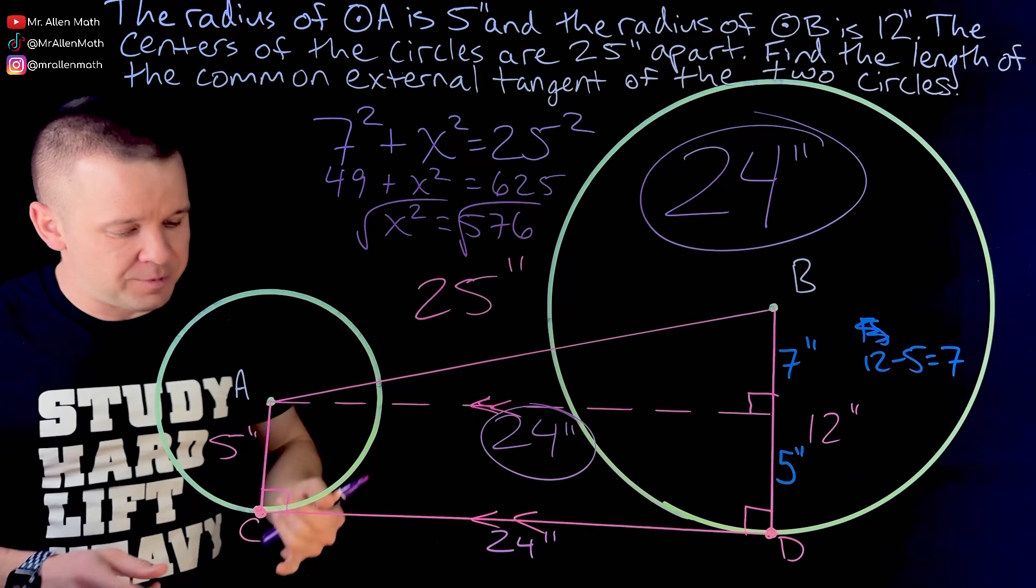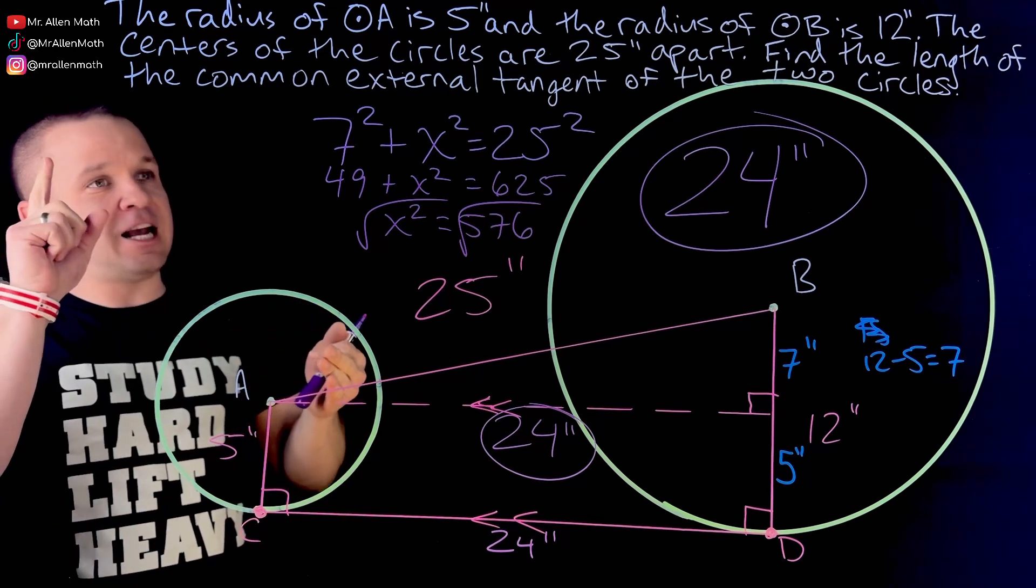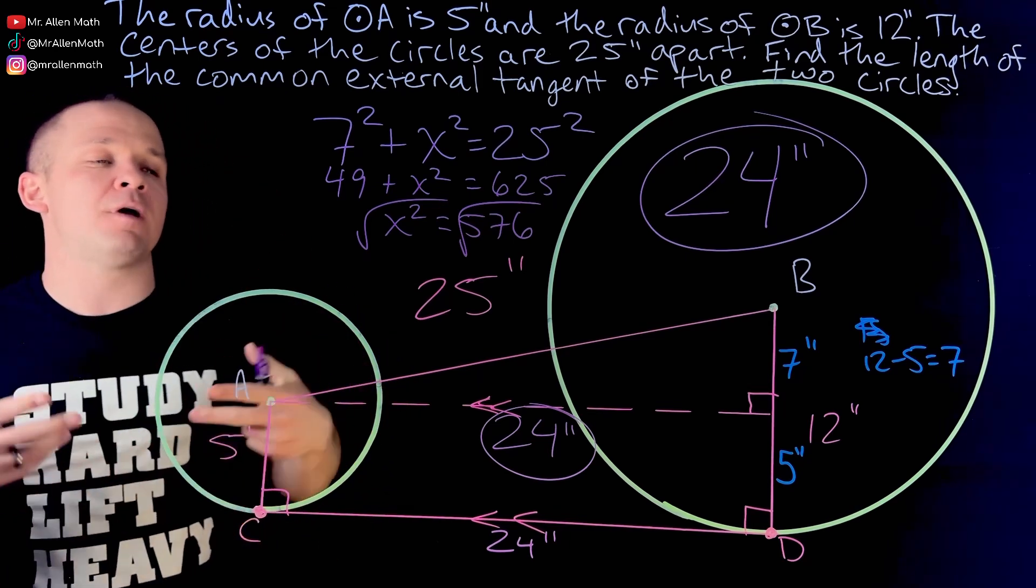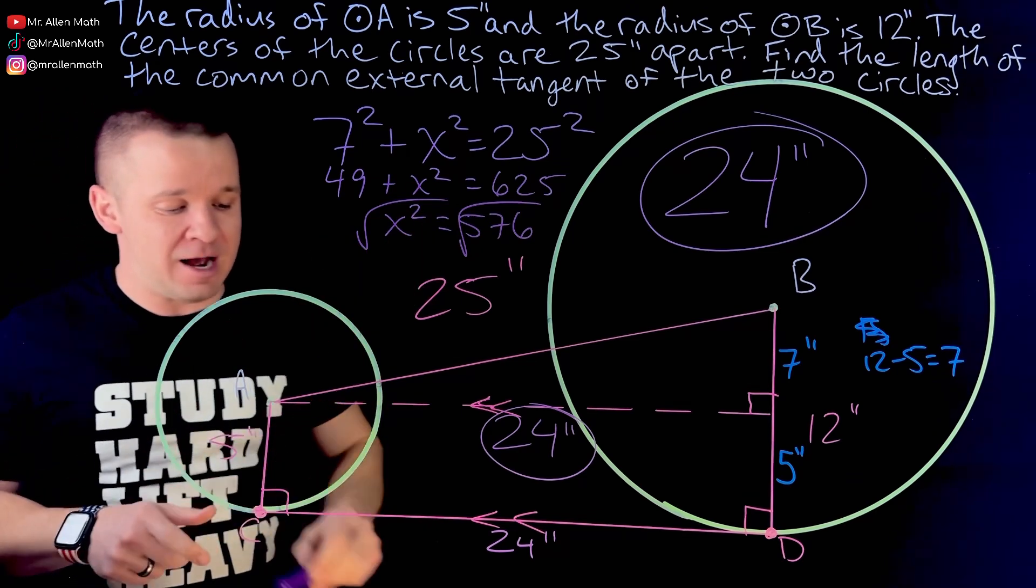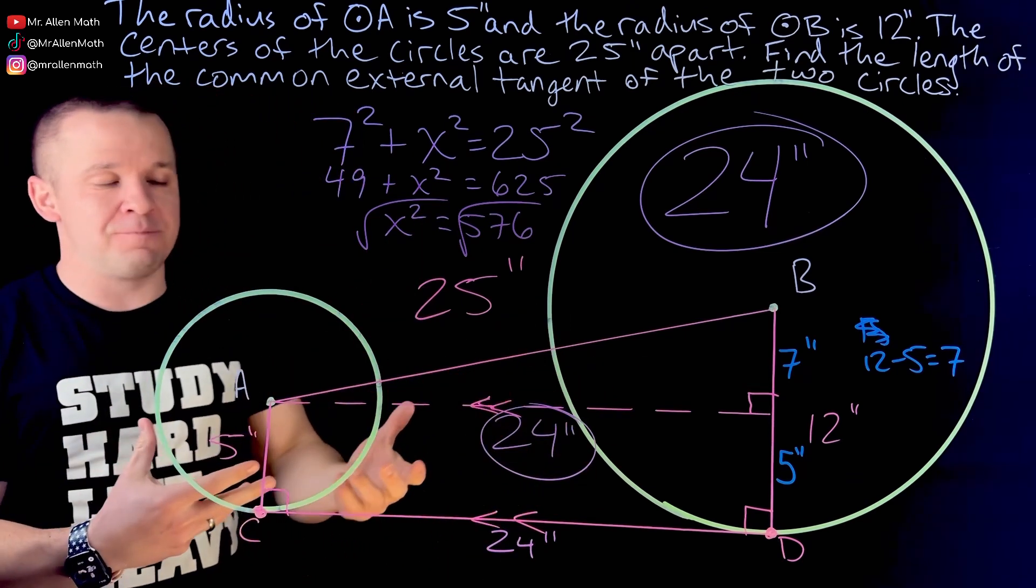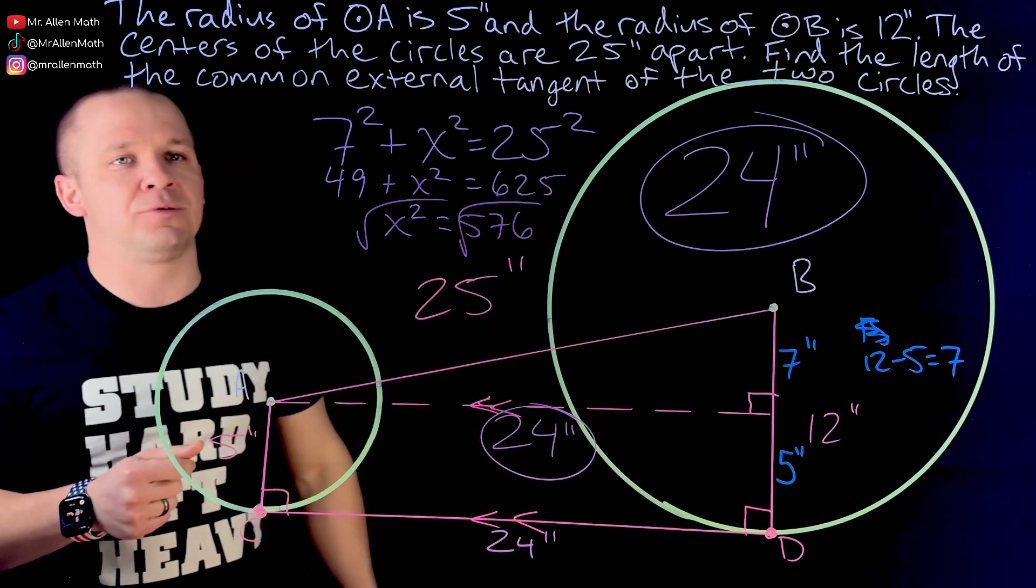But your Pythagorean triples, 3, 4, 5, 5, 12, 13, 8, 15, 17, 7, 24, 25. Those are all good to know, especially in your circles unit. It comes back. A lot of these work out nicely with Pythagorean triples. So just allows you to move a little faster through it.